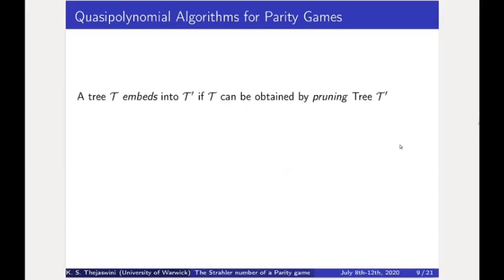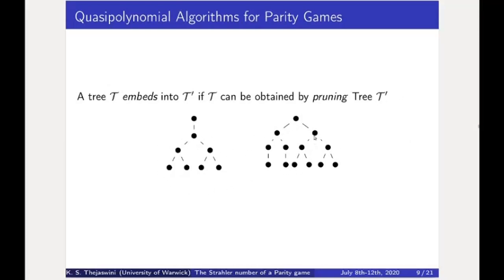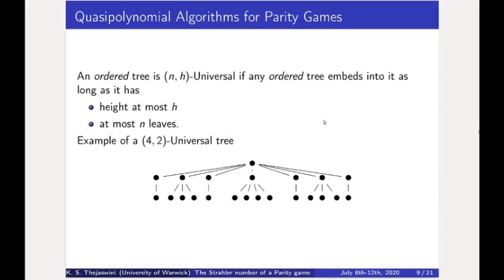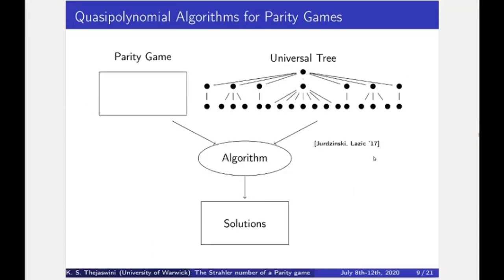What are universal trees? First, we need to know what it means to embed a tree into another. A tree T embeds into another if it can be obtained by pruning that other tree. An NH-universal tree is a tree large enough such that any ordered tree with height at most H and at most N many leaves can be embedded into it. For example, a 4-2 universal tree is one into which any tree with 4 leaves and height at most 2 can be embedded.